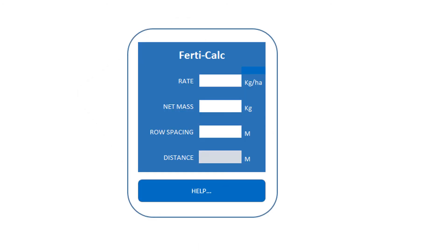You're probably thinking that you won't remember all of this. Well, to help you, we've prepared a calculation guide which has all the steps written down. To make it even simpler, we've also designed a handy Excel spreadsheet application for you. Simply enter your recommended rate of application, the net mass of fertilizer per tin, and your row spacing, and the spreadsheet will calculate the distance that the fertilizer must cover. There's also a useful help section with instructions and examples.